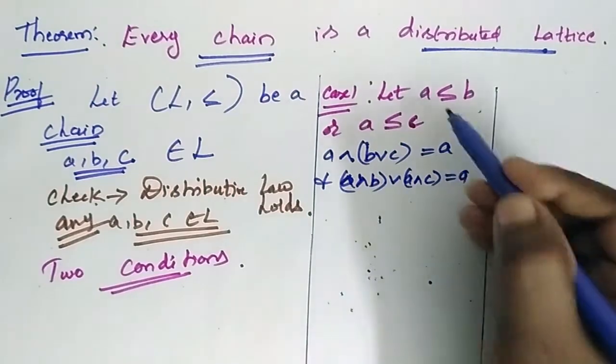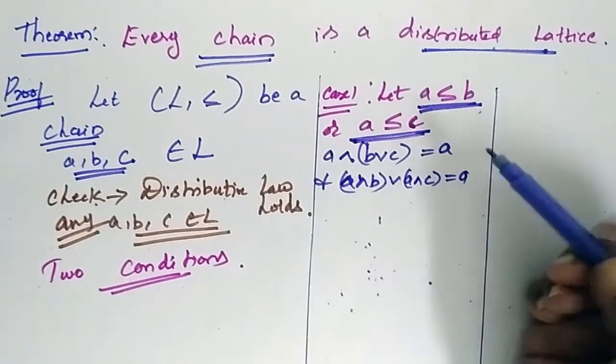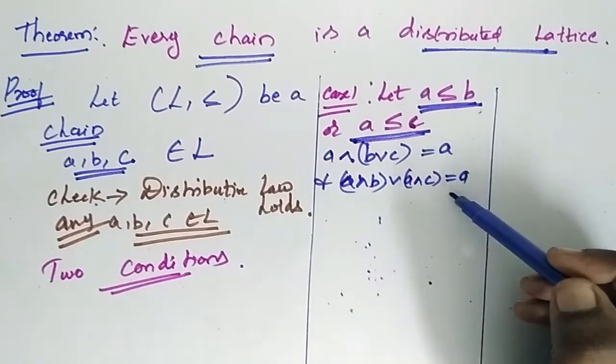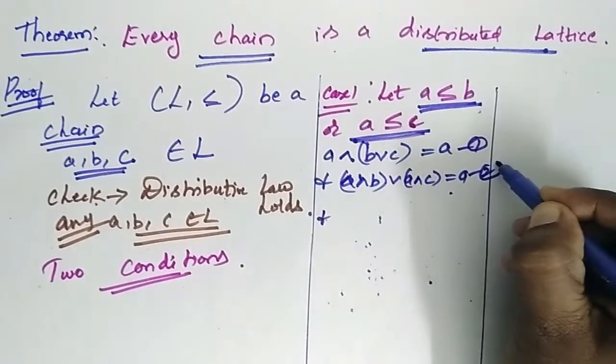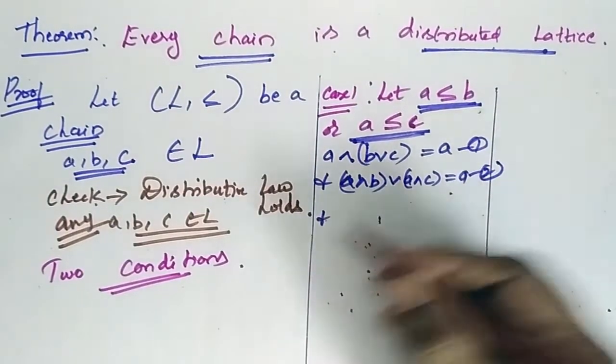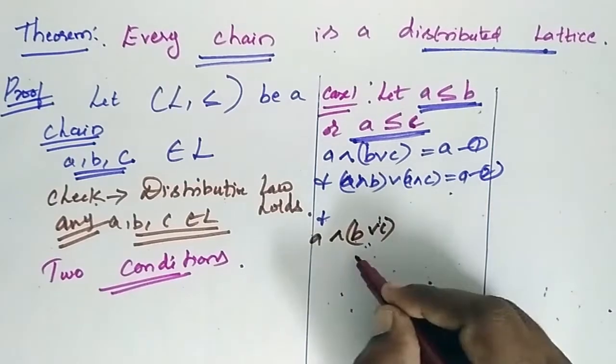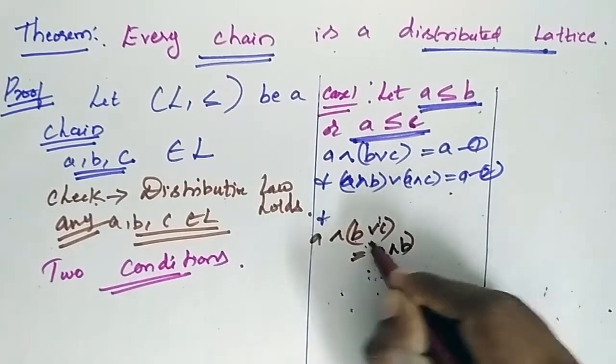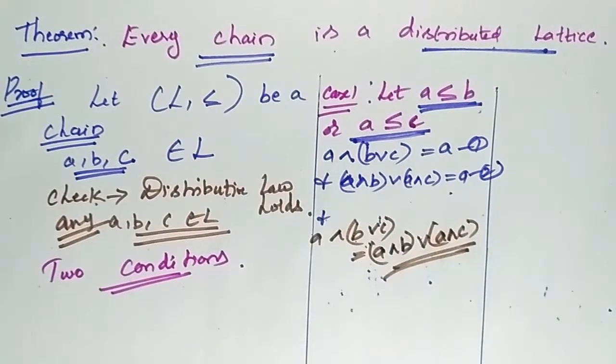Since a is less than b and a is less than c, you will have these properties. Therefore, this is 1 and this is 2. So 1 and 2 are equal. Therefore, a meet b join c is equal to a meet b join a meet c. So we have the first property that is satisfied.